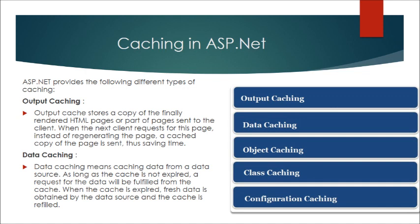Caching in ASP.NET. ASP.NET provides the following different types of caching. Output caching: output cache stores a copy of the finally rendered HTML pages or part of pages sent to the client. When the next client requests for this page, instead of regenerating the page, a cached copy of the page is sent, thus saving time.